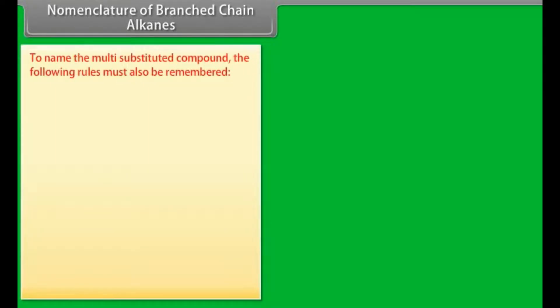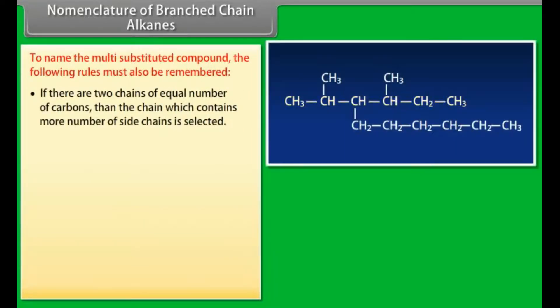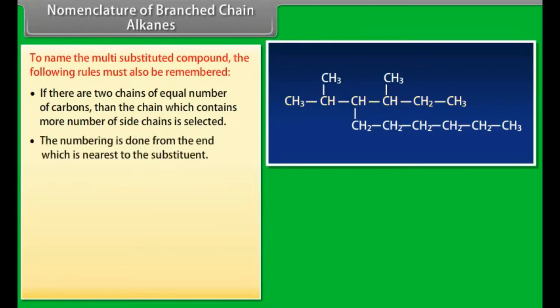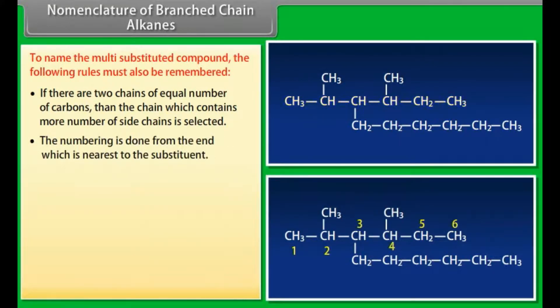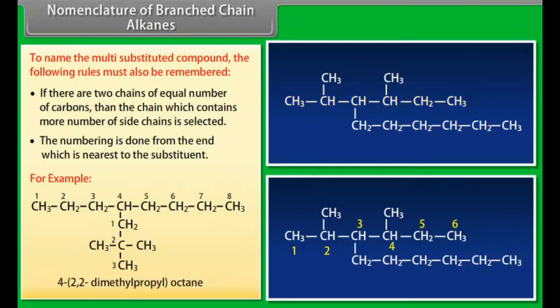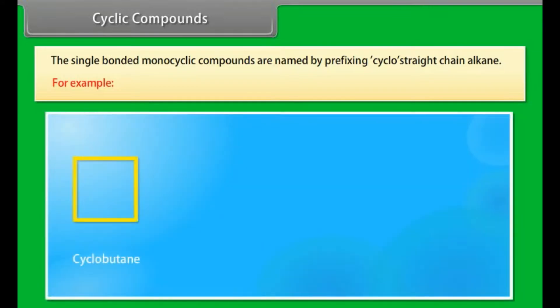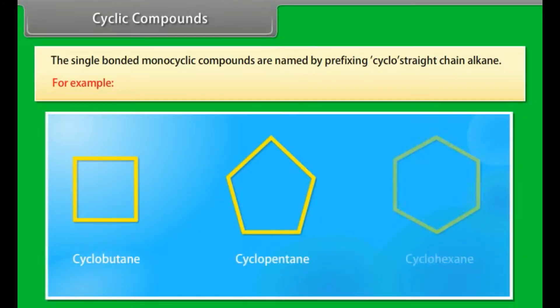To name multi-substituted compounds: if there are two chains of equal number of carbons, the chain which contains more side chains is selected. The numbering is done from the end nearest to the substituent. For example, the IUPAC name of the compound is 4-(2,2-dimethylpropyl)octane. Single bonded monocyclic compounds are named by prefixing cyclo to the parent chain alkane name, for example cyclobutane, cyclopentane, cyclohexane.